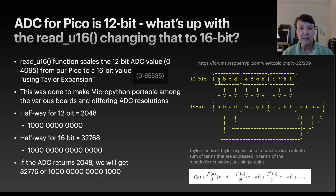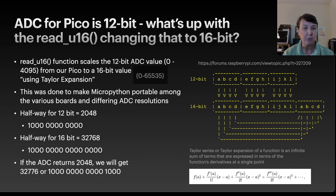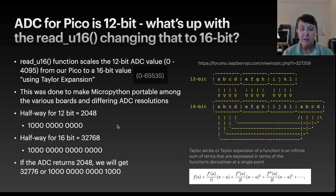It's pretty simple in concept: you take those bits A, B, C, D and copy them to the end to get a 16-bit number - that's supposed to align with the Taylor series. The reason is that MicroPython is written to be portable among different boards, not just the Pico. They all have different ADCs with different resolutions, so MicroPython scales every board's ADC to a 16-bit number using just one function.